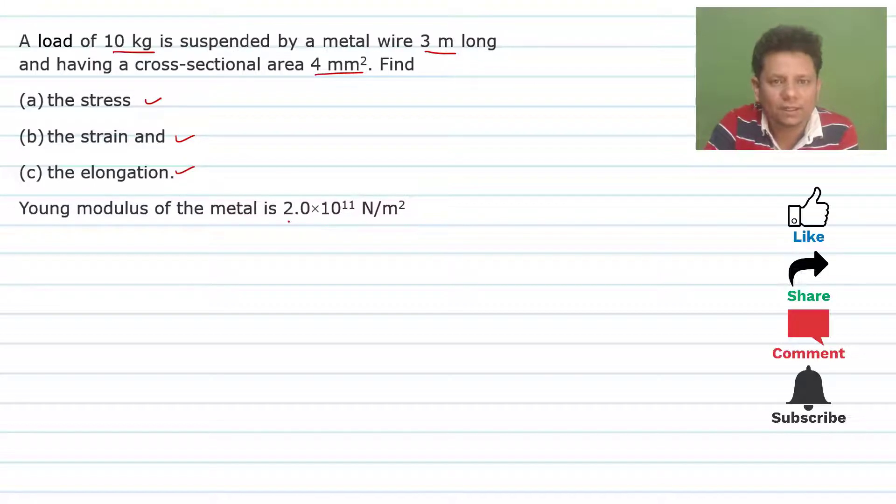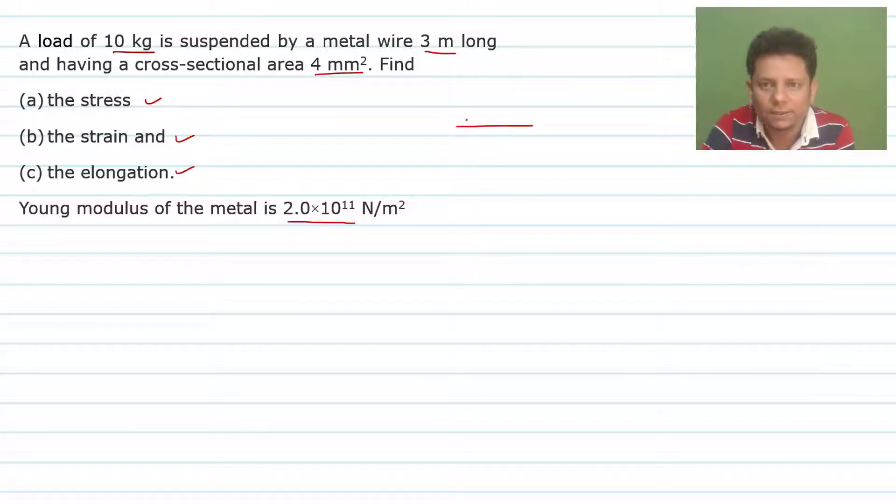Young's modulus of the metal is 2 × 10¹¹ newton per meter square. Now this scenario is that we have a roof and here we have a wire banded, and here we have 10 kg load.